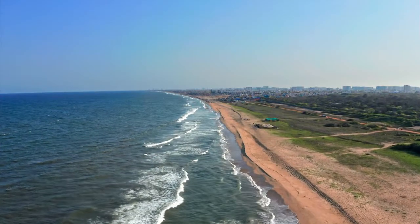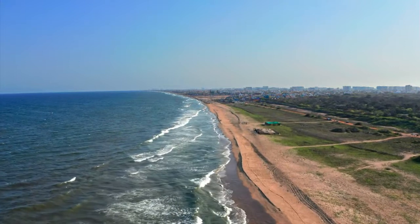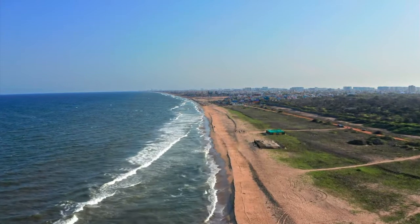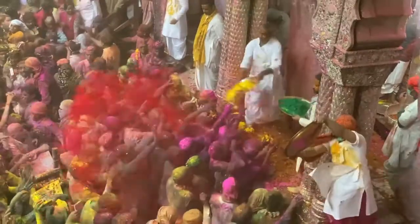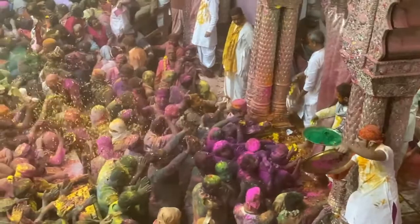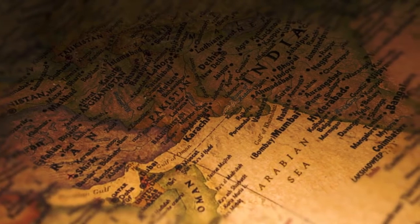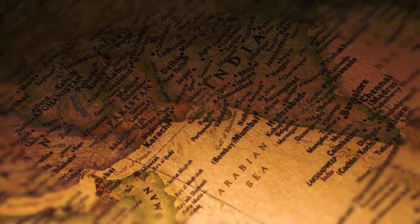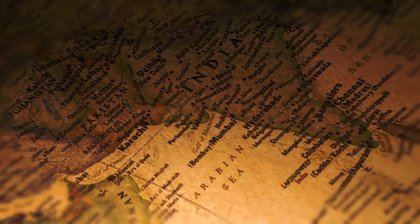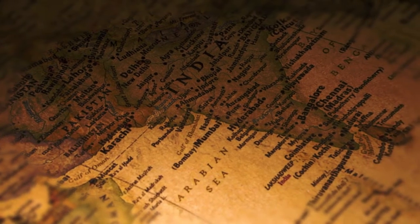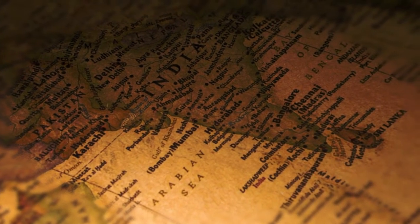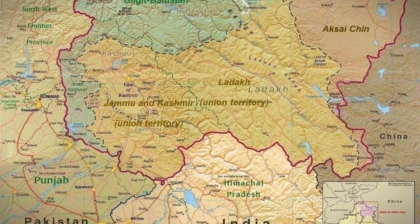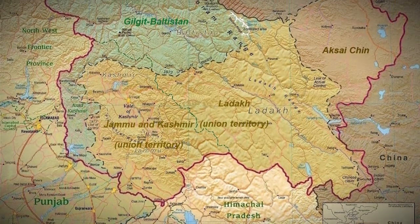Yet even after India gained independence in 1947, Britain's last act was to employ the tactic of division once again, both territorially and between Hindus and Muslims. British India was split into two independent countries, India and Pakistan, with East Pakistan becoming Bangladesh in 1971 after a bloody civil war, and the borderline that was drawn in the 1940s has created bloodshed and tensions ever since.